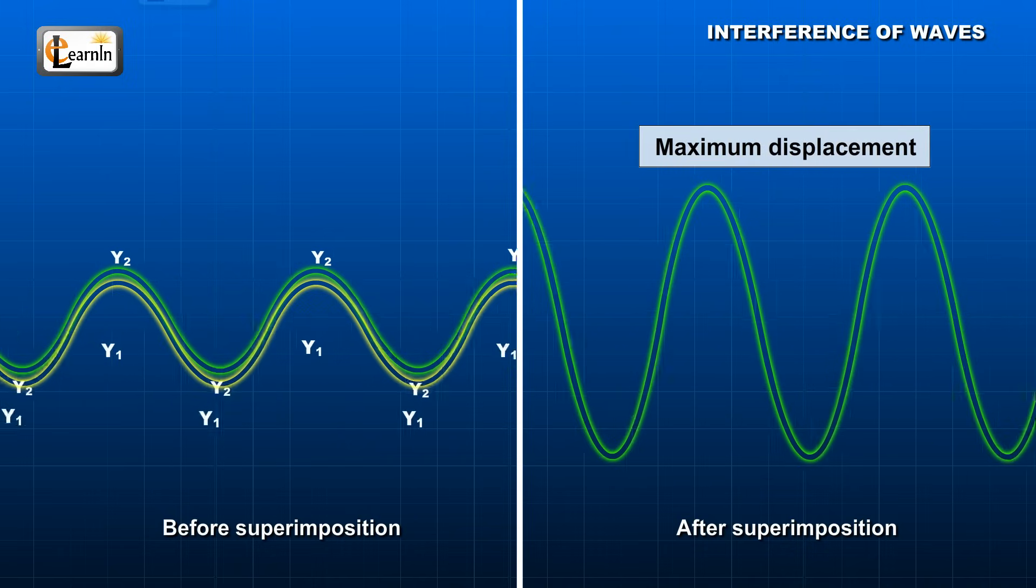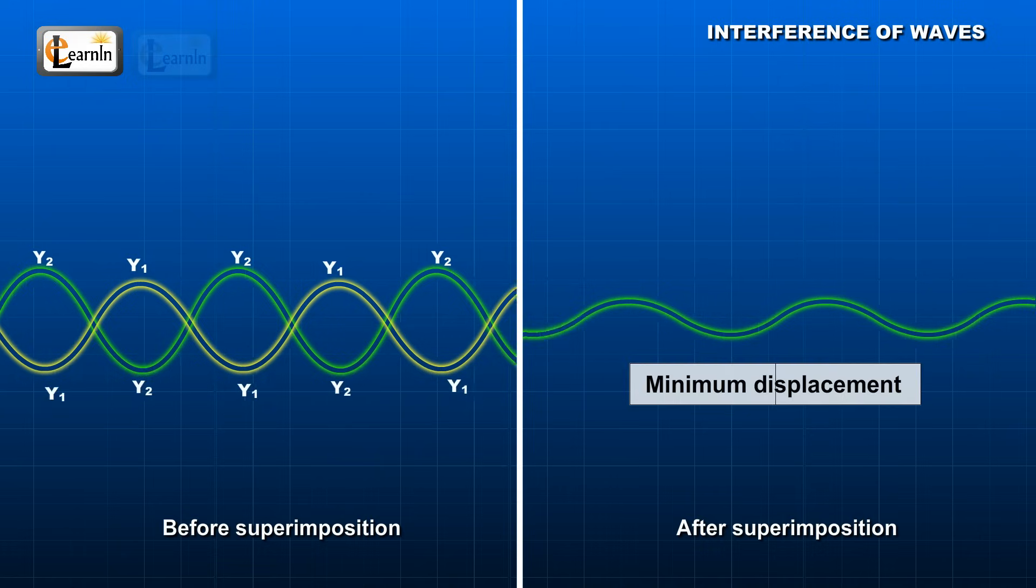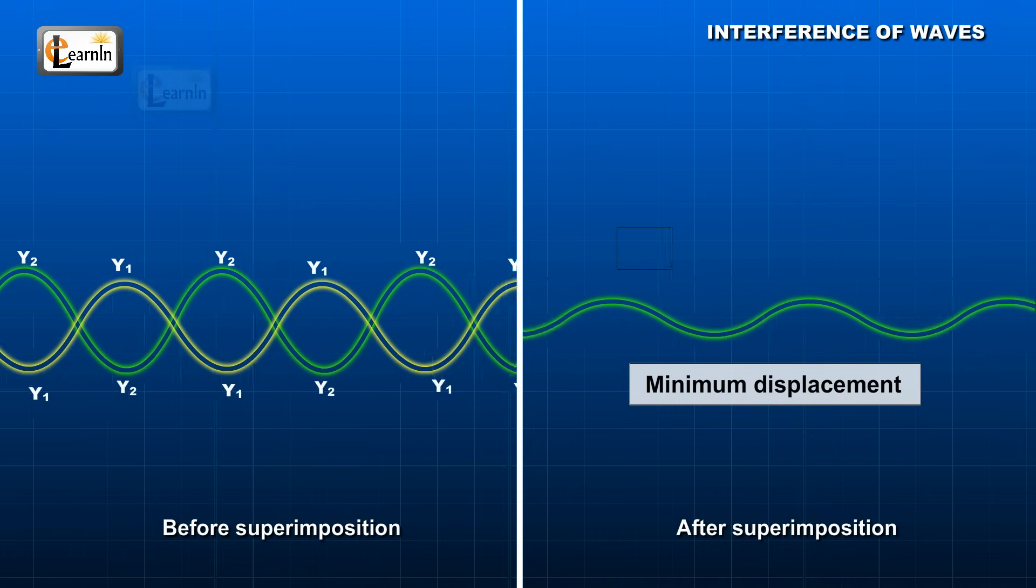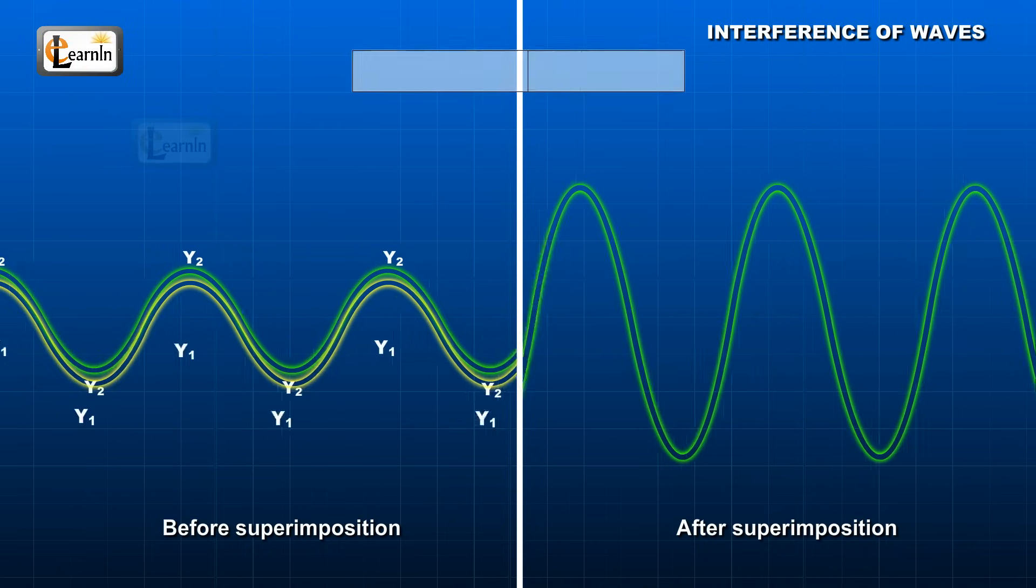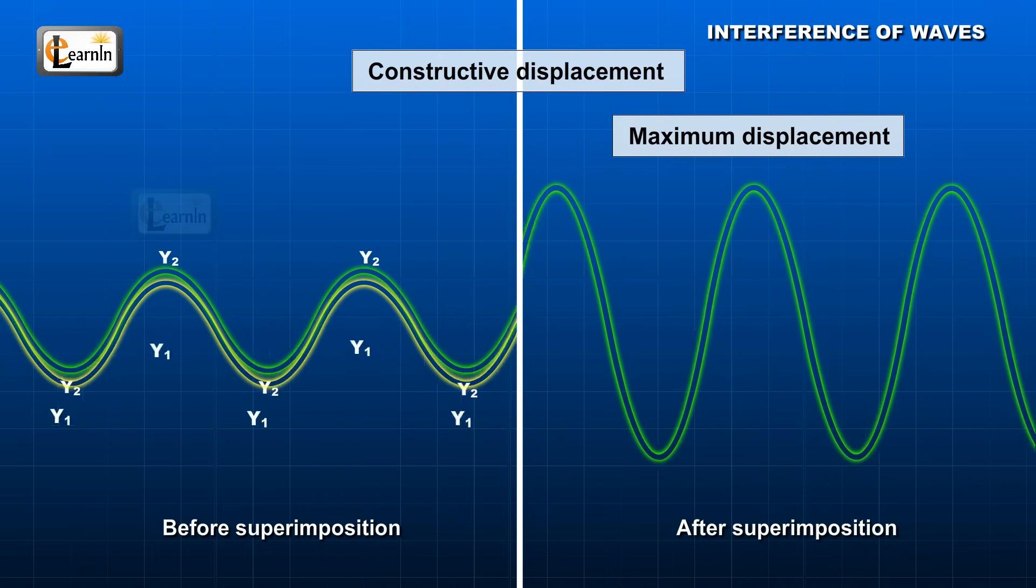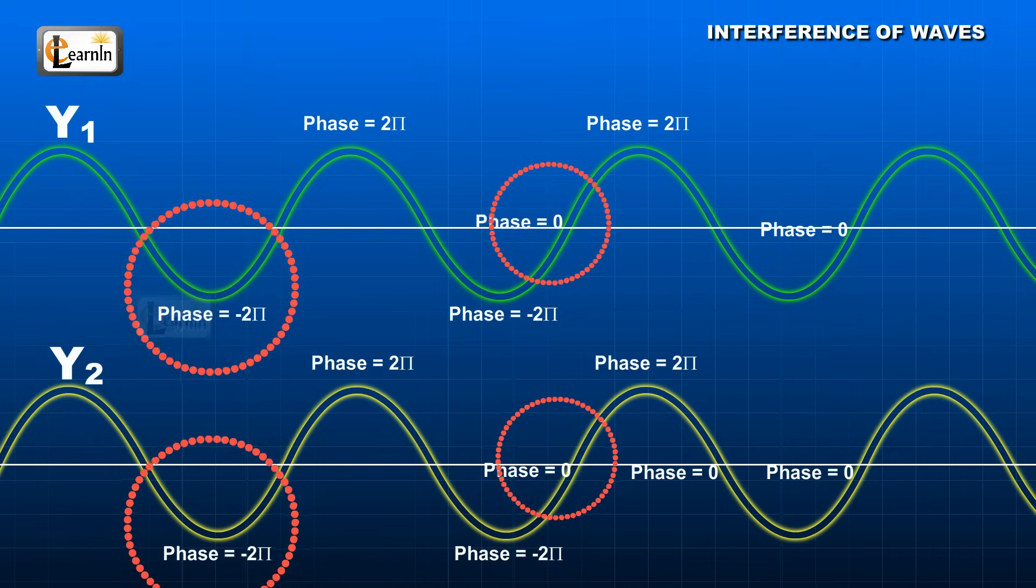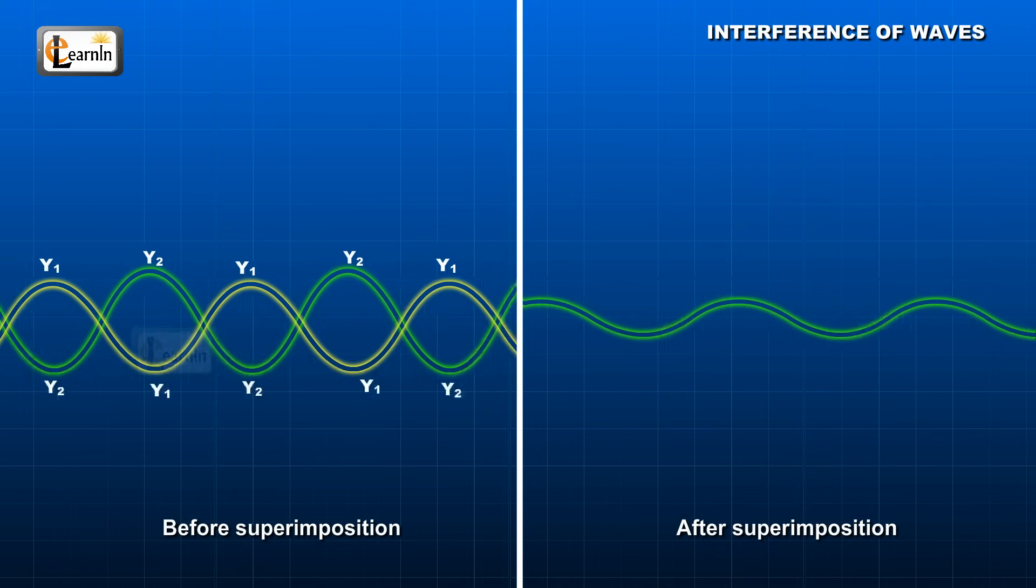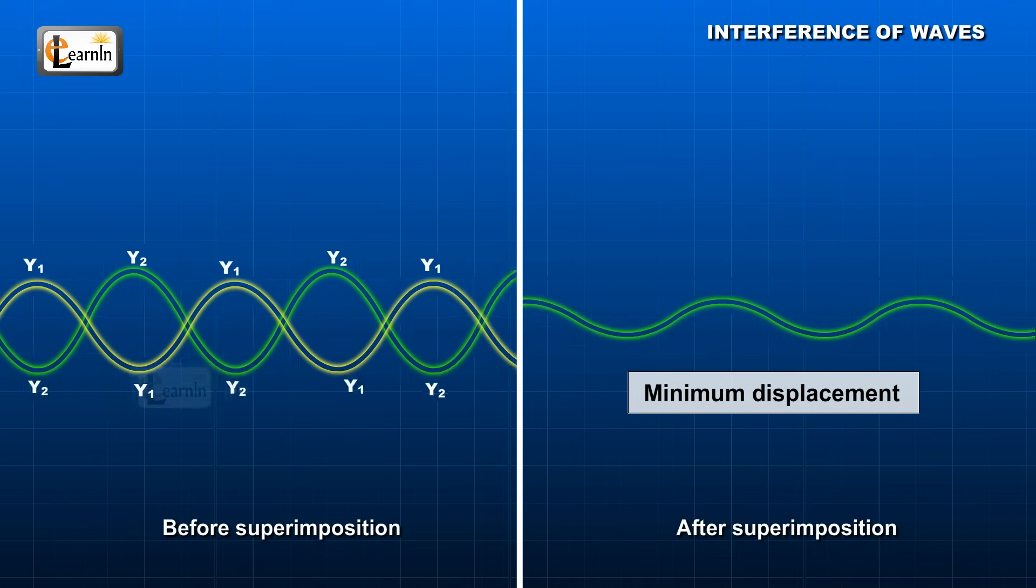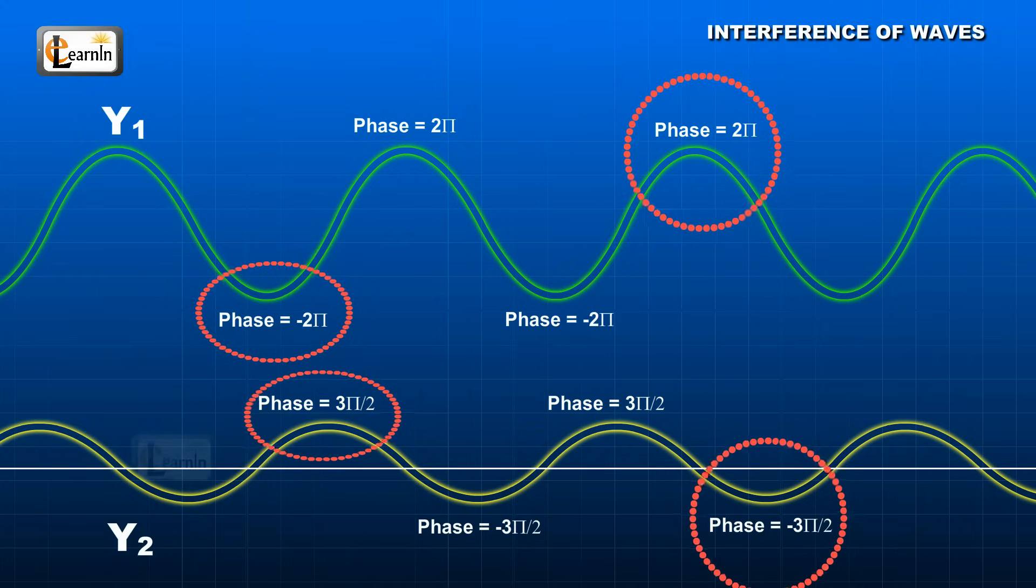When maximum displacement takes place, it's called constructive superposition. And when minimum displacement takes place, it's called destructive superposition. In constructive displacement, a maximum displacement curve is produced. Thus, when constructive displacement occurs, the phase difference between the waves would be zero, or a multiple of two pi. When minimum displacement occurs, waves superimpose destructively. The phase difference of the waves would be an odd integer multiple.